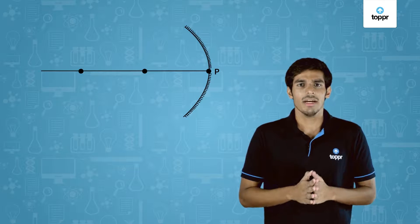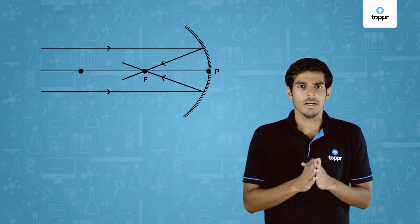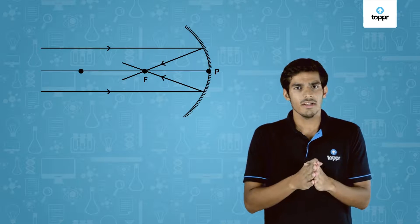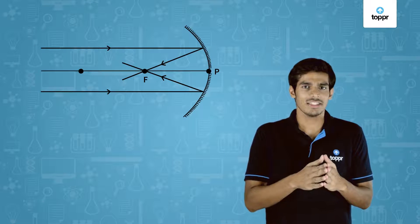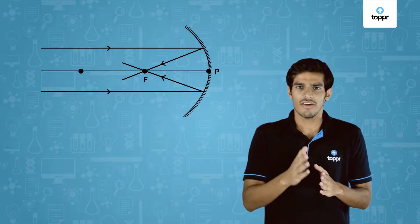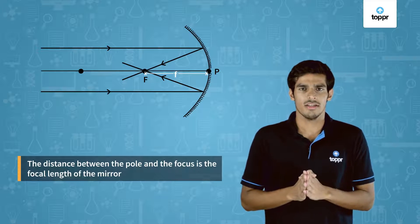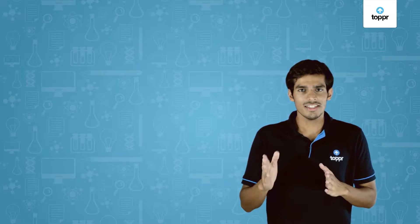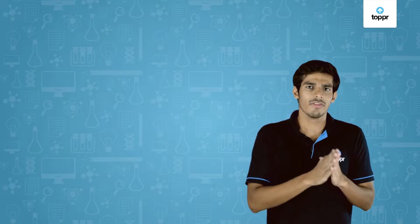Let us draw a ray diagram to get a better understanding of this activity. A number of rays parallel to the principal axis fall on the concave mirror, and after reflection they meet or intersect at a point on the principal axis. This point where these rays converge is called the principal focus, represented by F. The distance between the pole and the focus of the mirror is called the focal length, represented by small f. In the activity, the distance between the pole and the point where we got the brightest spot is the focal length of the mirror we used.